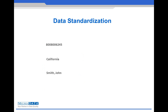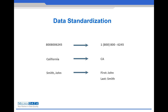When we know that our data is clean and correct, the next thing we want to do is make sure that our data is standardized and presented uniformly across all our databases. For example, we could have our phone numbers formatted in a certain way, states abbreviated rather than fully spelled out, or full names separated into first and last names. Whatever standardization rules we decide on, the important thing is to apply them to all our data, ensuring its integrity, reliability, and accuracy.